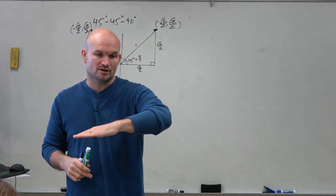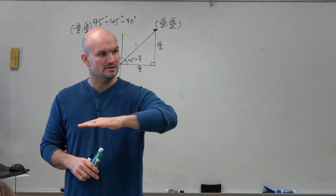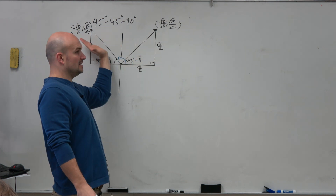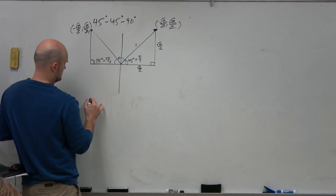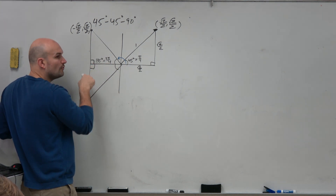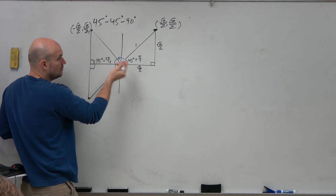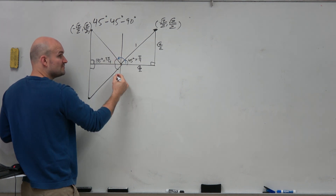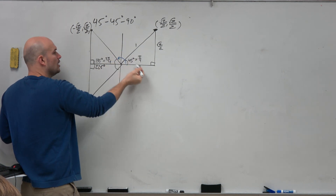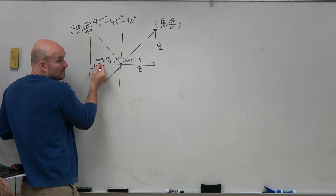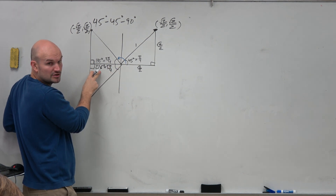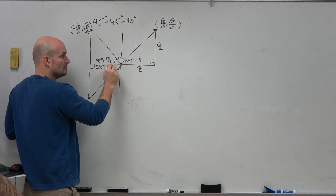Remember, all these angles are drawn from standard position. The reference angles are all 45 degrees or pi over 4, but we're finding the full angle from standard position. From here to here it's 45 degrees; from here to here it's 135. Reflecting again into the third quadrant: 180 plus 45 is 225 degrees, and 4 pi over 4 plus pi over 4 is 5 pi over 4. The coordinate point is now both values negative.